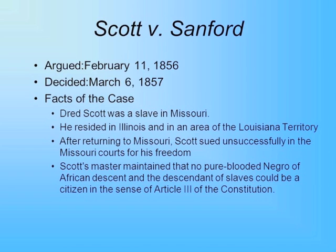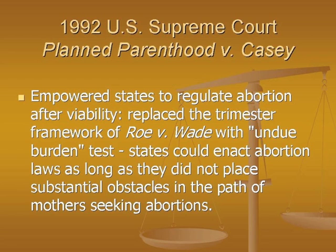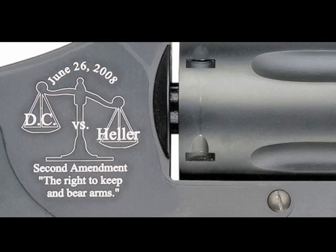Examples of judicial restraint include the following court cases. Upheld the law in Missouri that allowed slavery to exist in Dred Scott v. Sanford, 1857. Upheld restrictions on abortion as long as they did not place an undue burden on a woman in Planned Parenthood v. Casey, 1992. Ruled that the Second Amendment guarantees an individual the right to own a firearm even if they are not part of a well-regulated militia, in District of Columbia v. Heller, 2008.